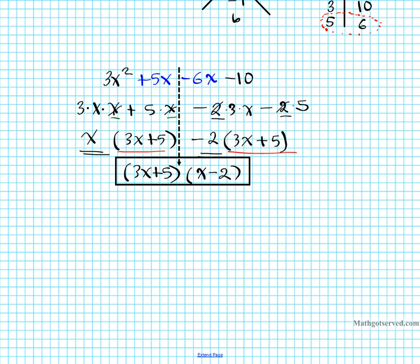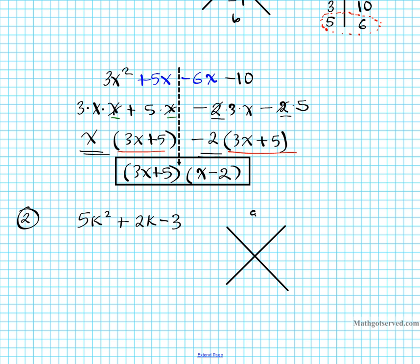Let's try example 2. You can pause the video, try it out, see if you get it — if you get stuck, complete the video for the solutions. We're going to work out 5k squared plus 2k minus 3. I'm going to do this one a little bit quicker. We want to make this into four terms so we can break it down the center and factor by grouping. So I just need my x game: a times c goes on top, b goes on the bottom. A times c is 5 times negative 3, which is negative 15, and b is 2.